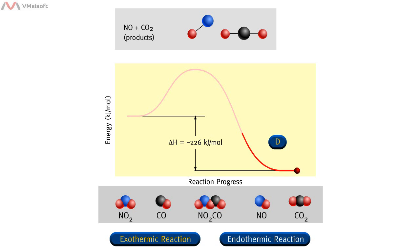The products of this reaction are nitrogen monoxide and carbon dioxide. The products are more stable than the reactants and have a lower potential energy. In this type of reaction, heat will be released by the reaction to the surroundings. The heat released by the reaction is 226 kilojoules per mole. This is an exothermic reaction.